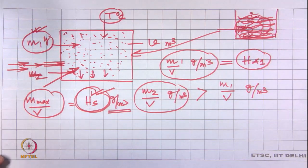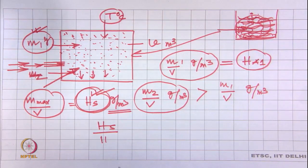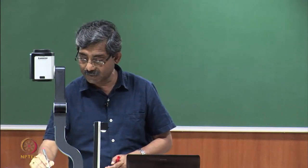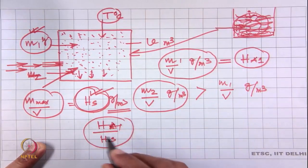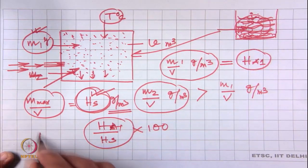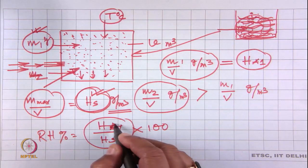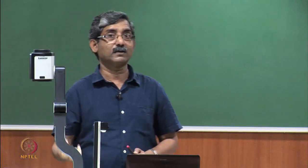If we take the ratio of the actual absolute humidity HA1 to the saturated absolute humidity Hs, this ratio is called the relative humidity. Expressed as a percentage — multiplied by 100 — it is called relative humidity percentage. That means the actual humidity in the room divided by the saturated humidity at the same temperature and pressure gives the relative humidity.